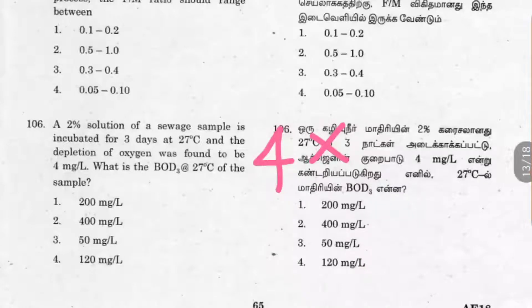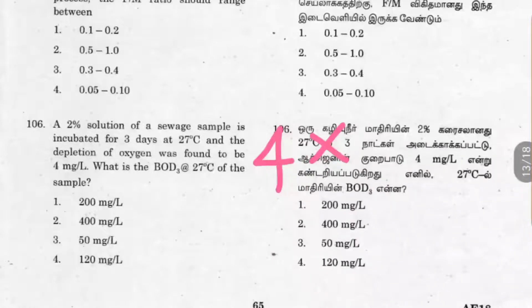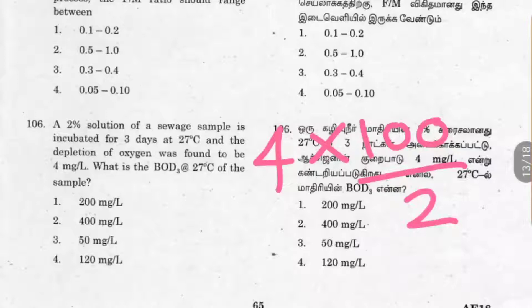Dilution factor means to what volume the sample is diluted. For example, if you take 5 ml of sample and dilute it to 1000 ml, you write 1000 by 5. Here, a 2 percentage solution means out of 100, only 2 percent is the sample, so you write 100 divided by 2. Therefore, 4 into 100 by 2 equals 200. Option A is the right answer.